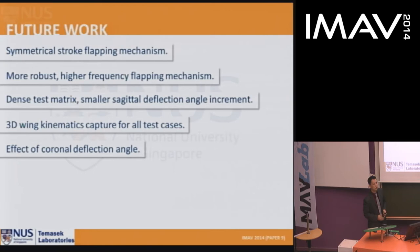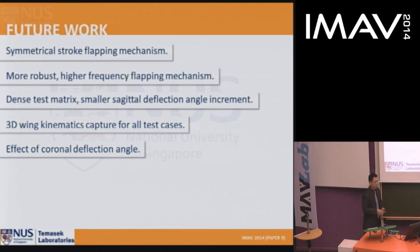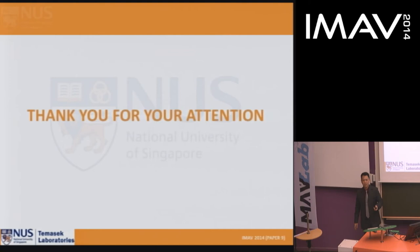In conclusion, this is a preliminary study. The problem was underestimated and many more tests are needed. It is possible to generate positive and negative pitching and yawing moments, but the behavior is highly nonlinear. Finding an equilibrium point where the sum of force and moment is zero is extremely challenging. Observed phenomena include force peak and wing rotation delays and compromised lift. Future work includes designing a symmetrical stroke flapping mechanism, a more robust higher-frequency mechanism, denser test matrices, 3D kinematics capture, and testing the coronal deflection angle for roll control.